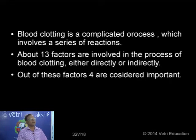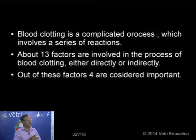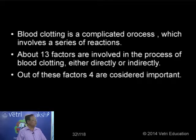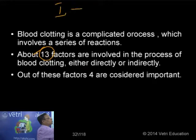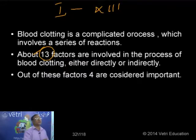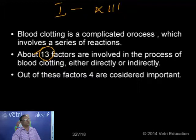Already we have nearly 36 factors identified as playing a major role in the process of clotting. There are 13 major factors named from 1 to 13 in Roman numerals, and they also have specific names.